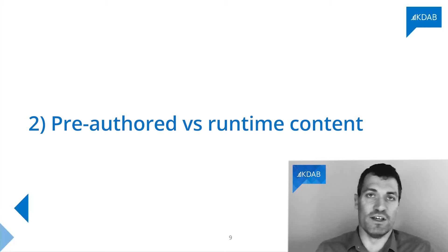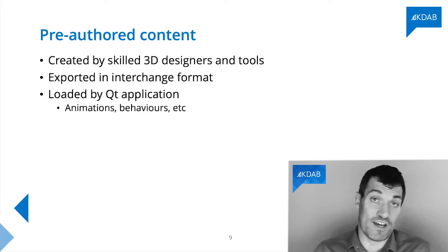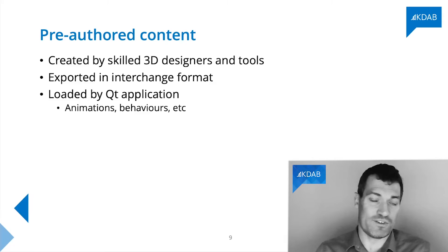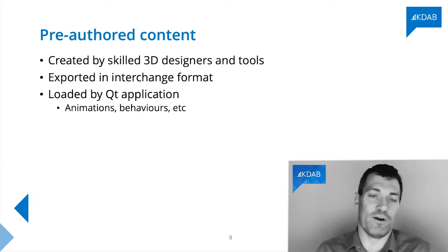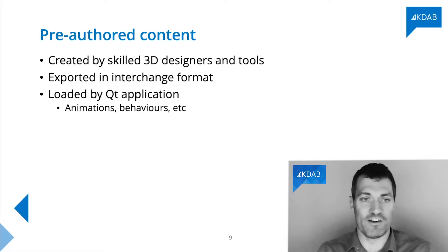Of course there are many other kinds of 3D content you might be showing in a Qt application, but these areas cover the broad topics we see. The second large thing to consider is where your content is coming from, especially if it was produced in advance or loaded at runtime. Pre-authored content is very common in 3D space, especially in the entertainment world of movies and games, where large groups of 3D designers use large and very expensive tooling to produce very complex 3D content.